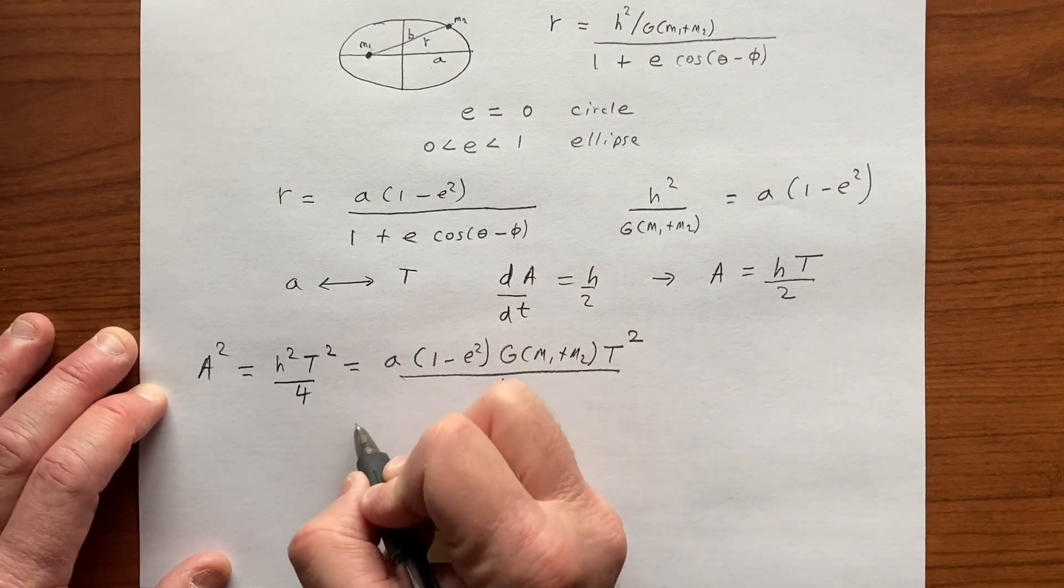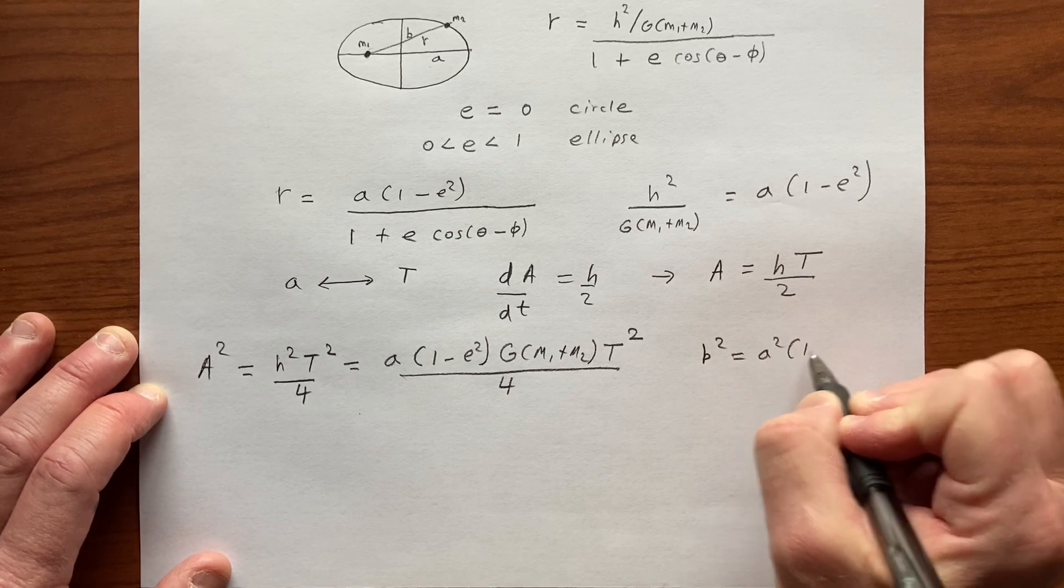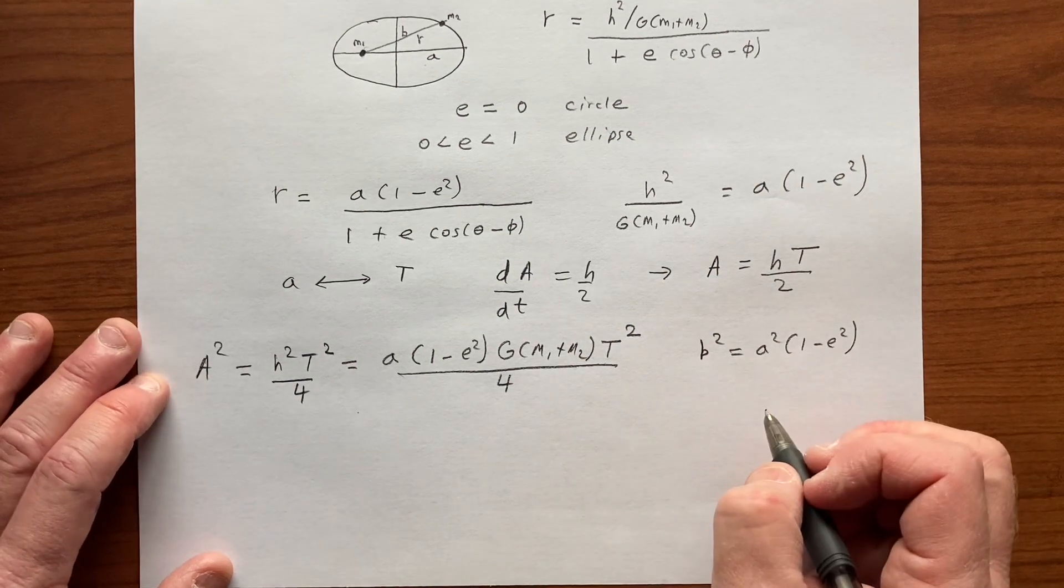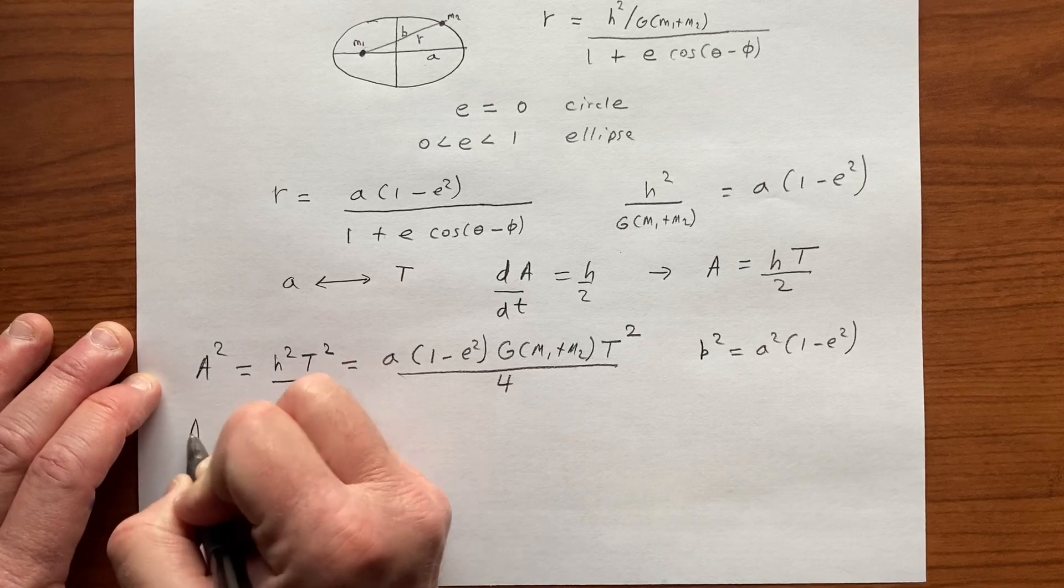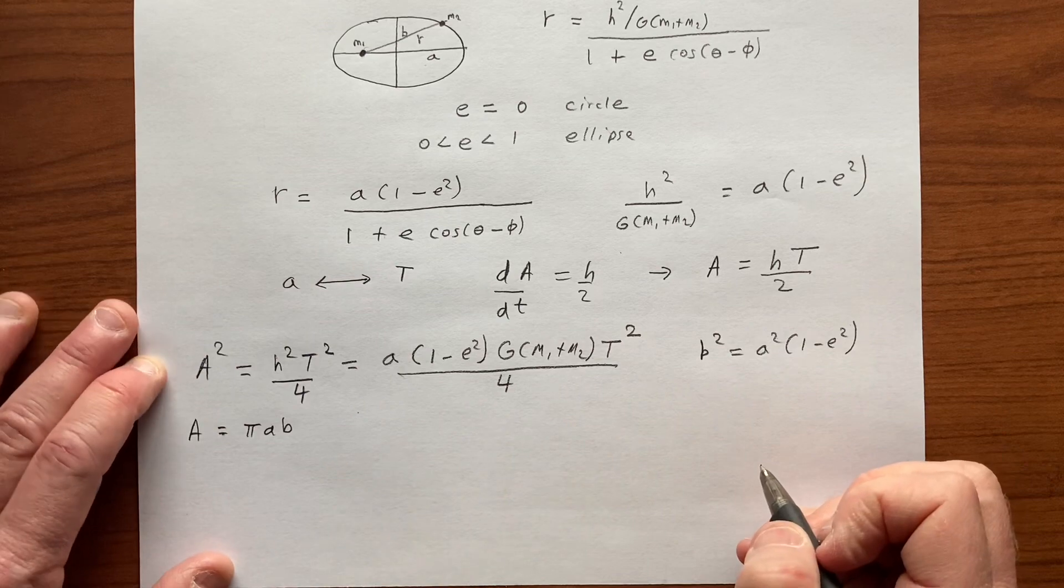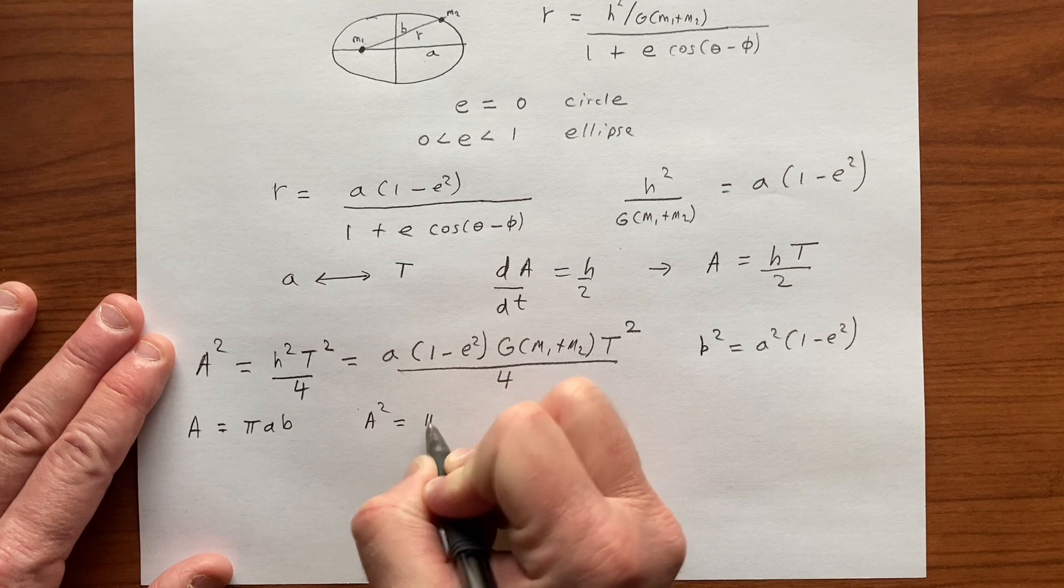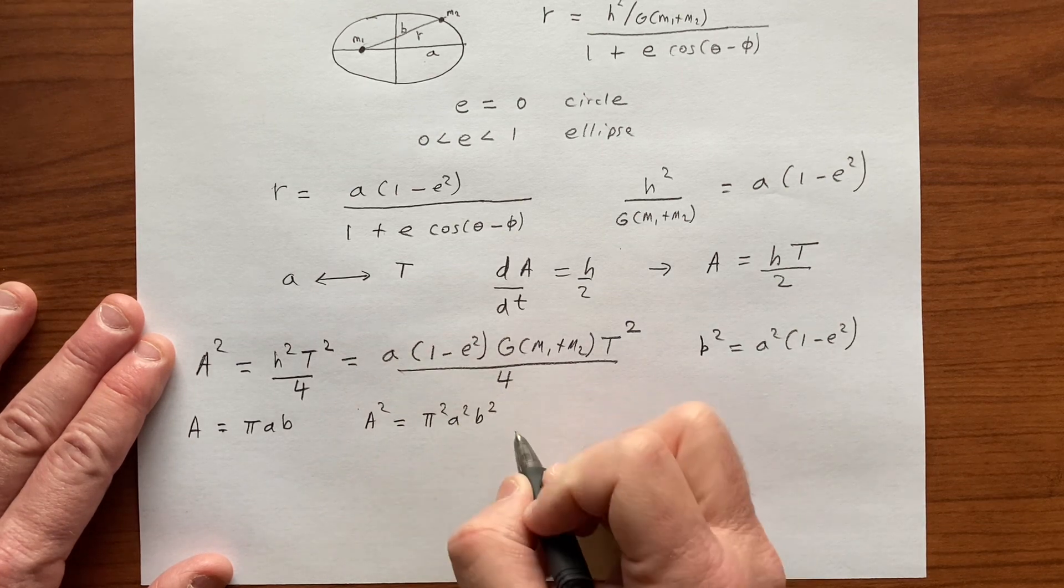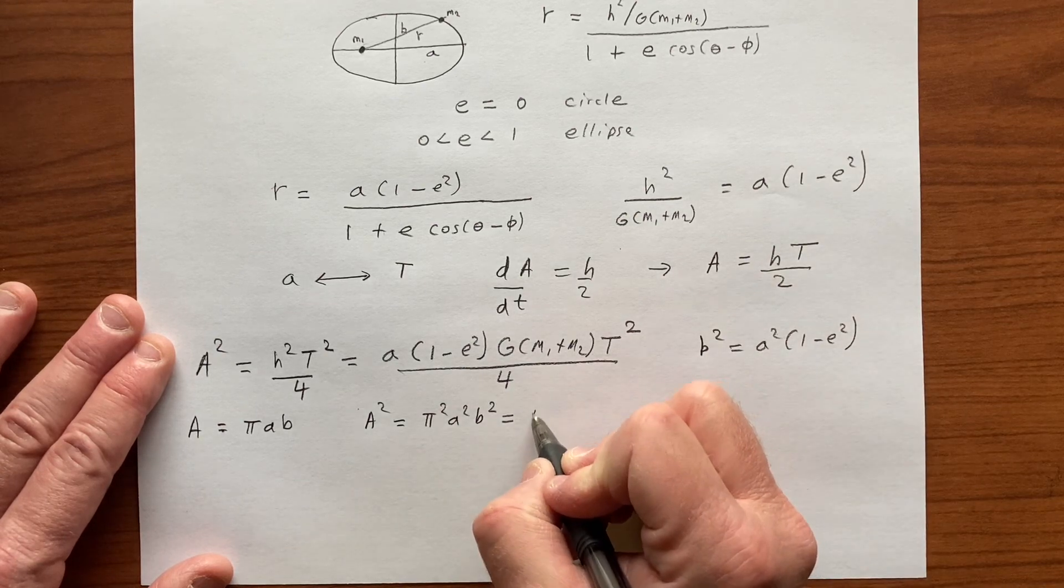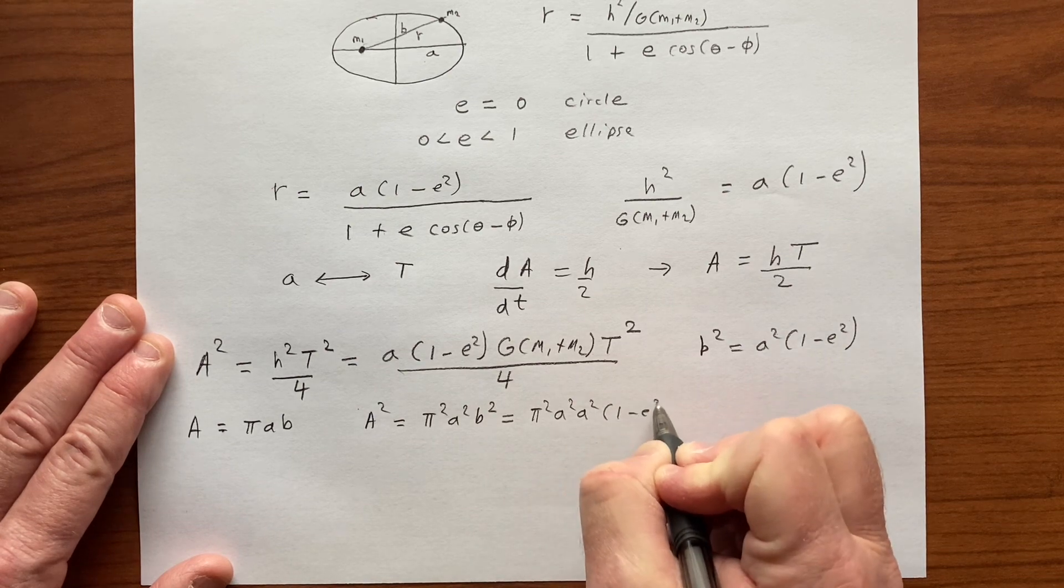And from the geometry, we also have that B squared is equal to A squared times 1 minus E squared. And the area of an ellipse A is also, in terms of A and B, is equal to pi times A times B. And so we have A squared is equal to pi squared B squared, which is equal, if we replace B squared with this, to pi squared A squared times A squared, 1 minus E squared.